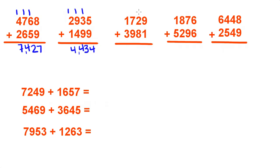9 and 1 is 10. Carry over the 1, bring down the 0 as a placeholder. 2 and 8 is 10 plus 1 is 11. 9 and 1 is 10 plus 7 is 17. Carry over the 1, bring down the 7.